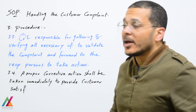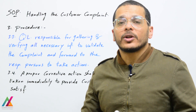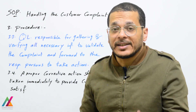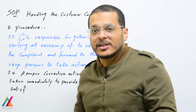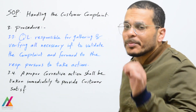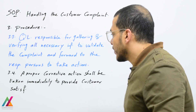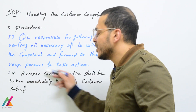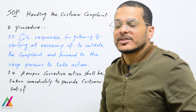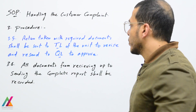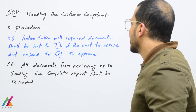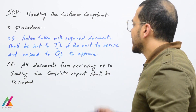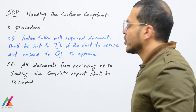After receiving, the quality lead is responsible for gathering and verifying all information required to validate the complaint — ensuring at the beginning that the complaint is valid and needs to be solved — then forwarding it to the responsible persons for the relevant lab activity. Proper corrective action shall be taken immediately to meet customer satisfaction. The action taken with all required documents shall be sent to the technical lead of the unit for revision, then re-sent to the quality lead for approval.